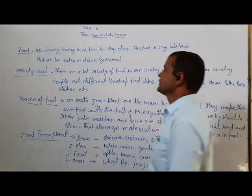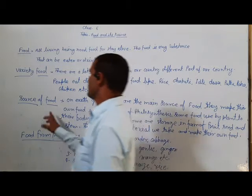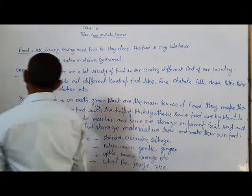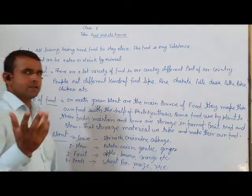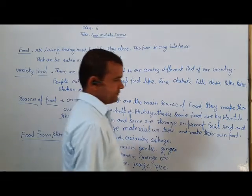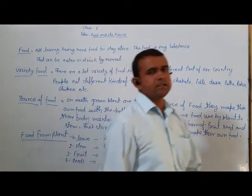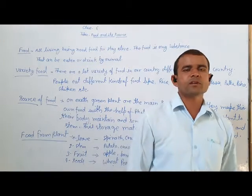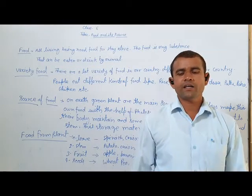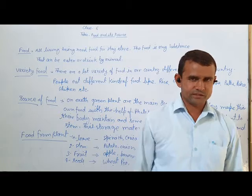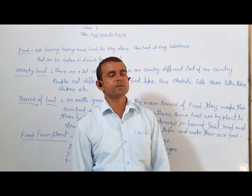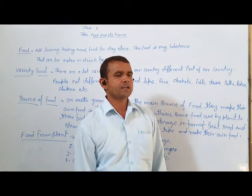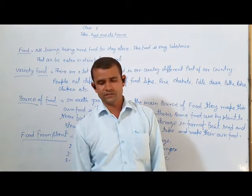Next, source of food. On the earth, the main source of food are green plants.